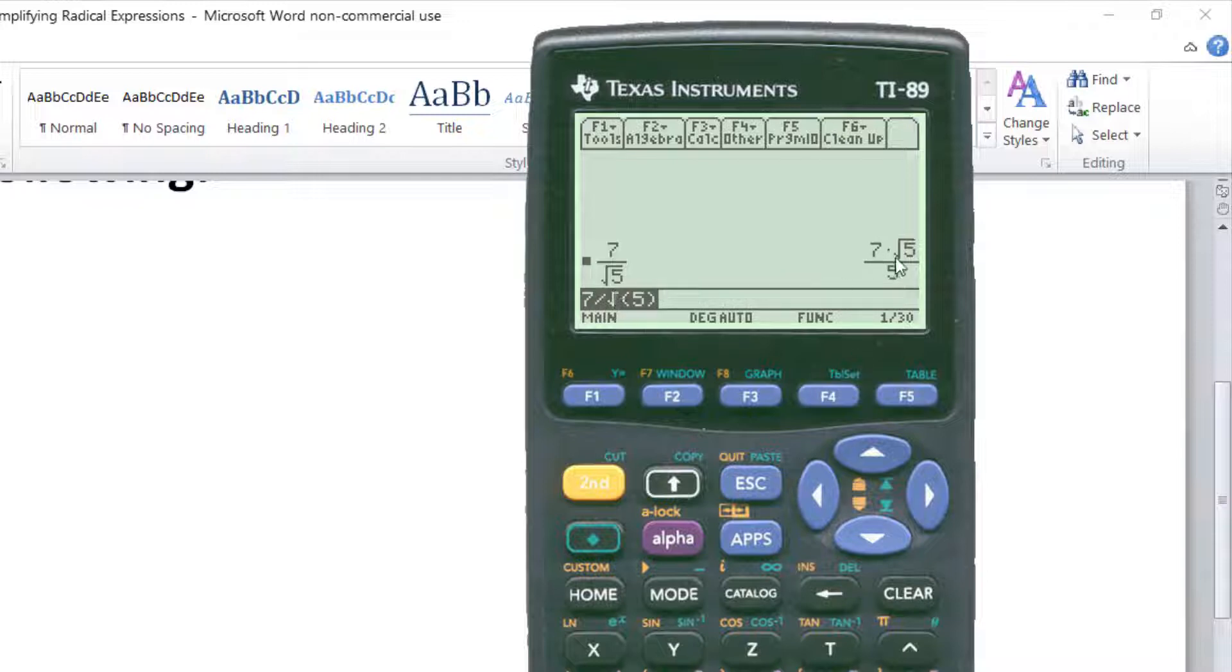Now instead of the square root of 5 in the bottom there, we just have 5. At the top we have 7 radical 5. We can have a radical in the numerator as long as it's simplified. So that's it for this one.